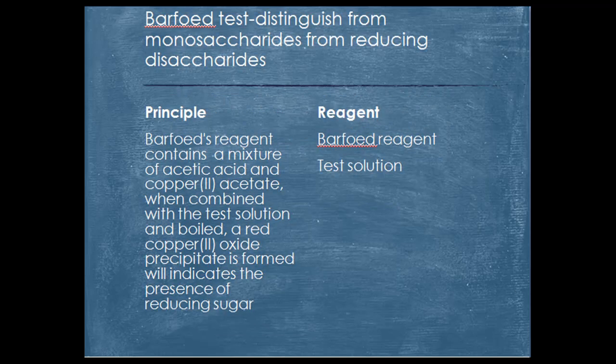Another test is the Barfoed test, which is used to distinguish monosaccharides from reducing disaccharides. Barfoed's reagent contains a mixture of acetic acid and copper acetate. When combined with the test solution and boiled, a red copper oxide precipitate is formed, indicating the presence of reducing sugar. These are the reagents and the test solution used.